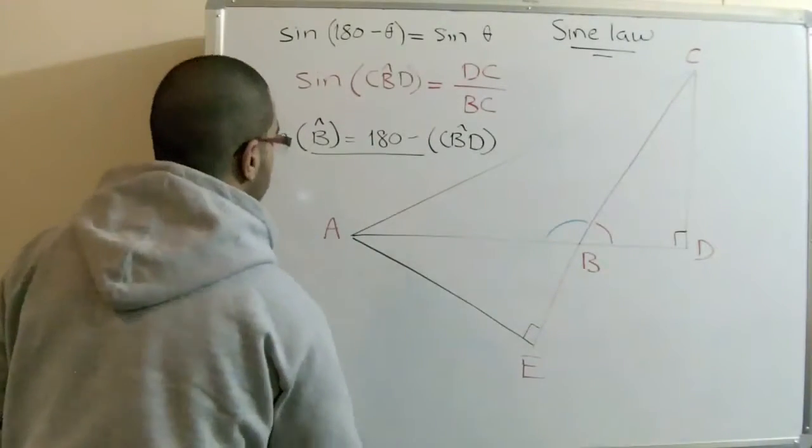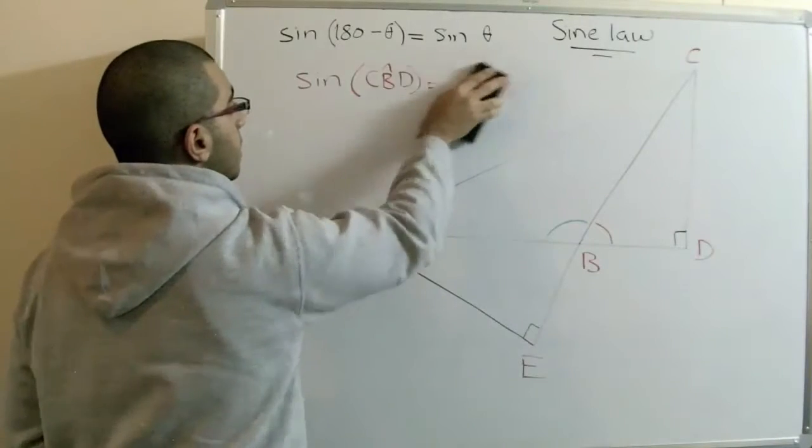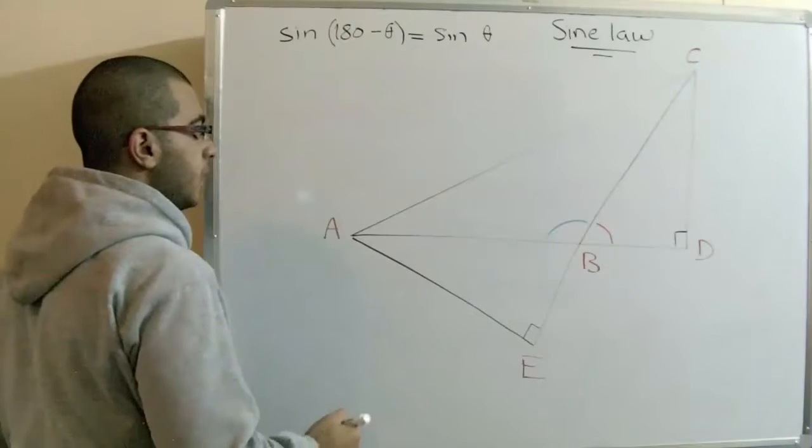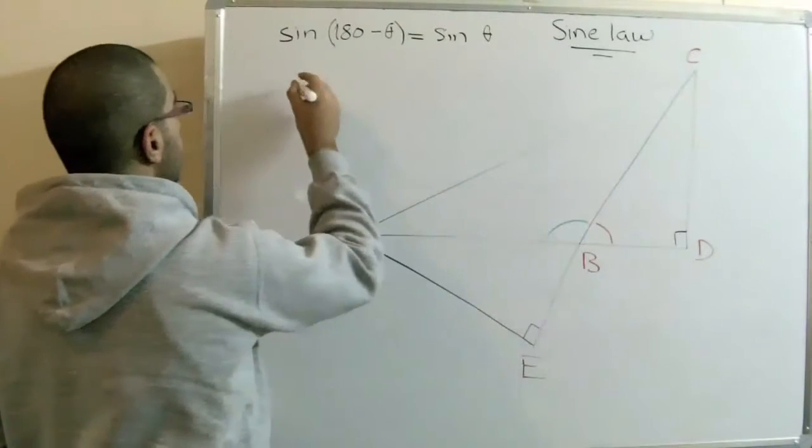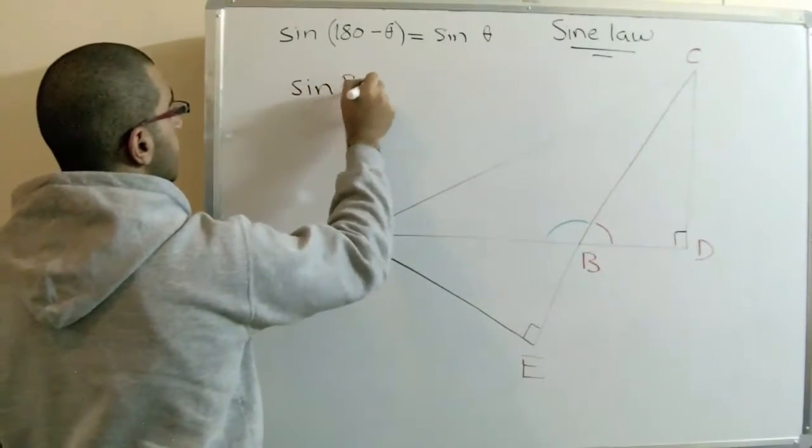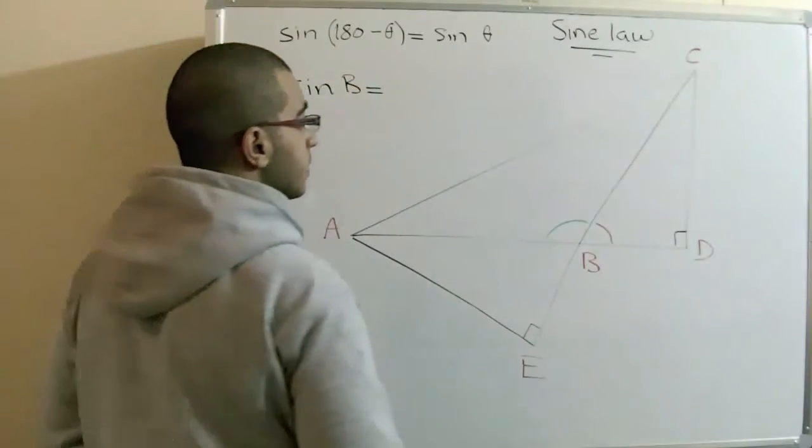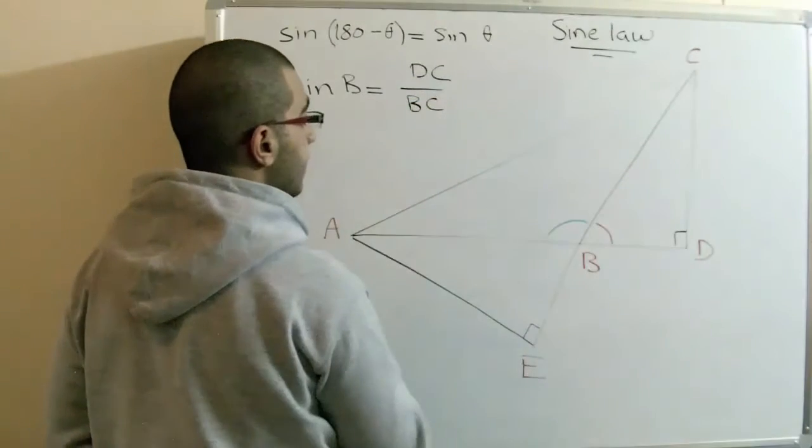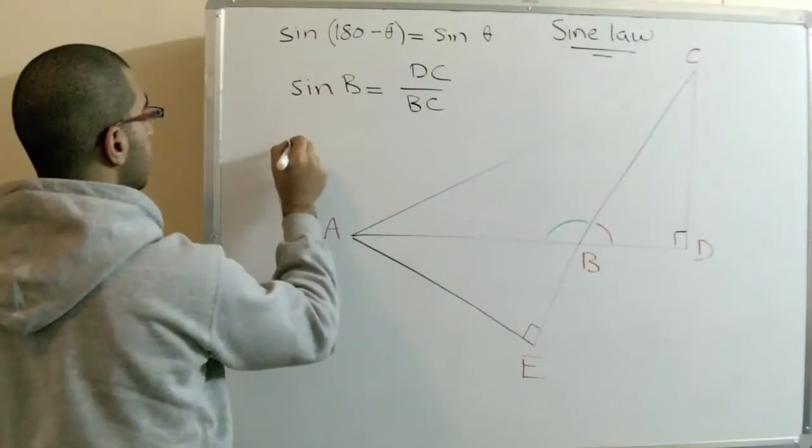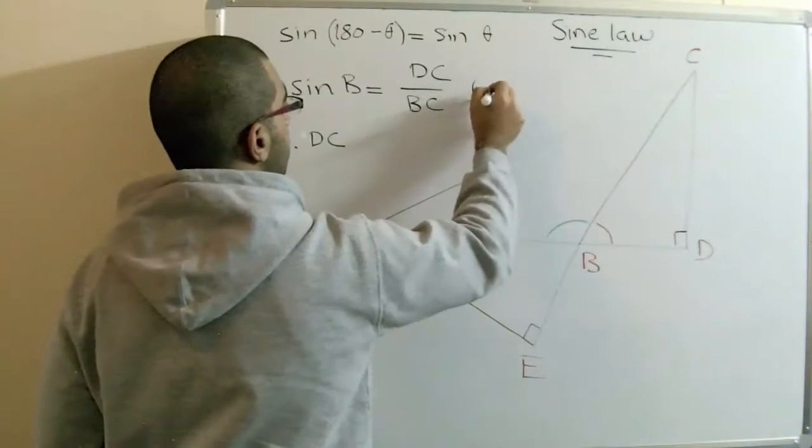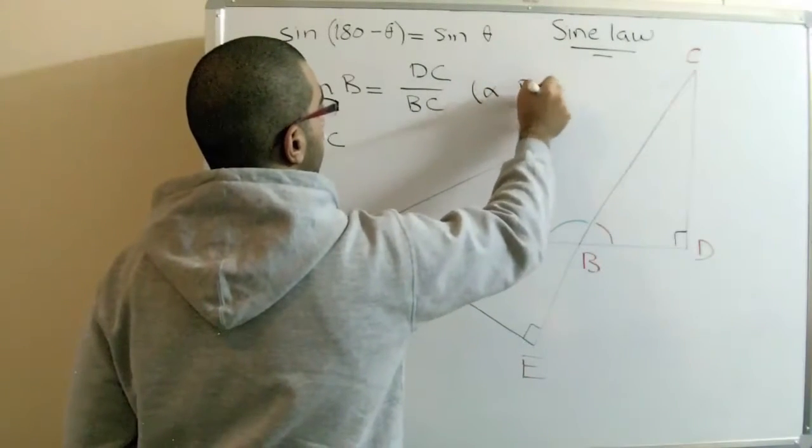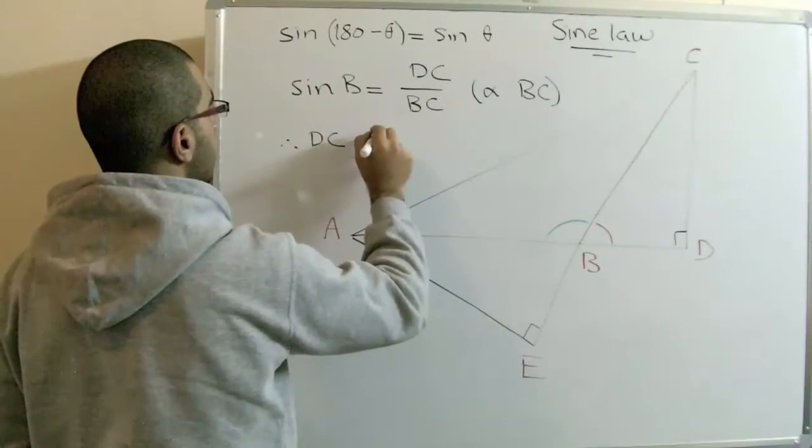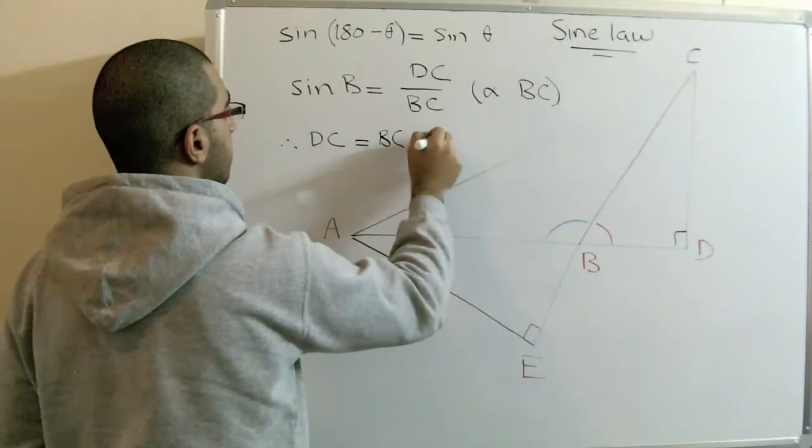So from here, we can say sin B equals DC over BC. Then, DC equals, we multiply by BC. So DC equals BC sin B.